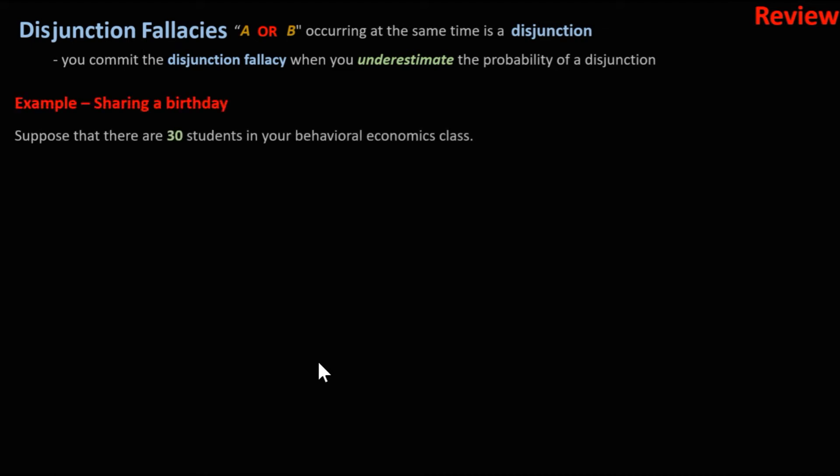Now let's look at a disjunction fallacy. A or B occurring at the same time is a disjunction. You commit the disjunction fallacy when you underestimate the probability of a disjunction. Let's take a look at the birthday sharing example. Suppose there's 30 students in our behavioral economics class. What is the probability that at least two students have the same birthday?